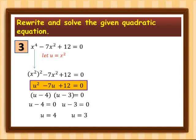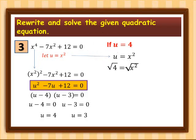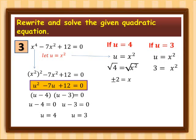Since u = x squared, substituting u = 4 gives 4 = x squared. Taking the square root of both sides: x = positive and negative 2. Similarly, substituting u = 3 gives 3 = x squared. Since we cannot simplify the square root of 3, x equals positive and negative square root of 3.